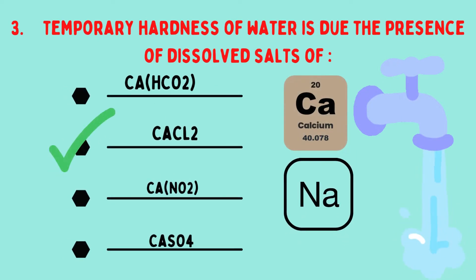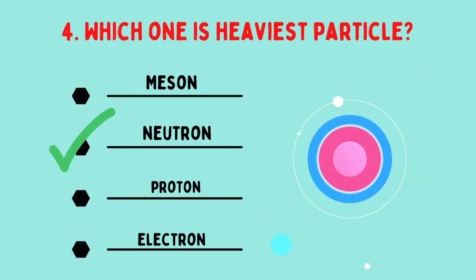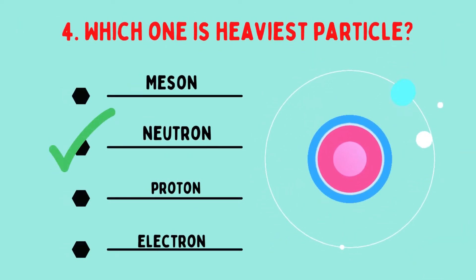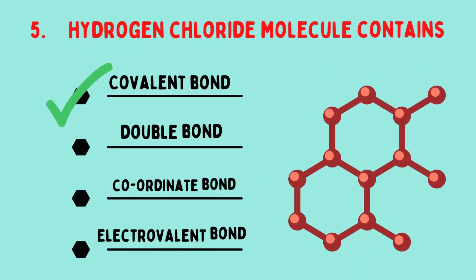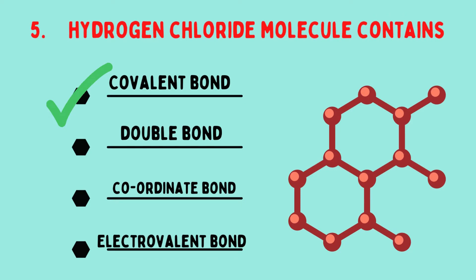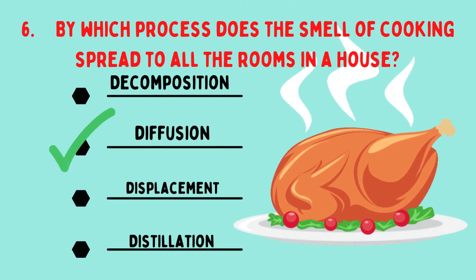Temporary hardness of water is due to the presence of dissolved salts of calcium chloride. Which one is the heaviest particle? Neutron. Hydrogen chloride molecule contains a covalent bond. By which process does the smell of cooking spread to all the rooms in a house? Diffusion.